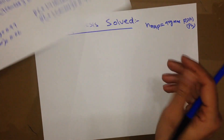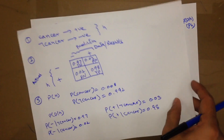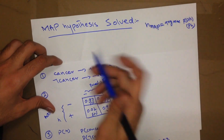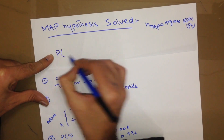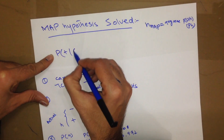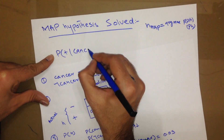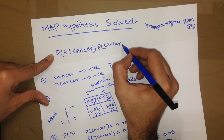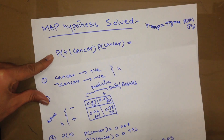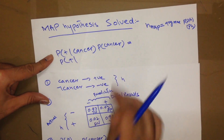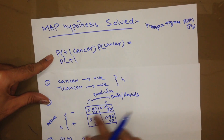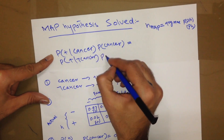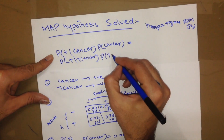We need the hypothesis for all positive data, and we need to multiply P(D|H) by P(H). So let's do it: we need positive data with cancer hypothesis, giving us P(D+|Cancer) times P(Cancer). And we need positive data with not cancer hypothesis, giving us P(D+|Not Cancer) times P(Not Cancer), where the hypothesis is also not cancer.